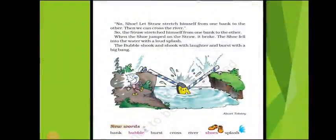Here we have some new words. Bank means the slope along which the river water runs. Bubble means a small round body of gas. Burst means to open suddenly. Cross means to pass over something. River means a natural body of water. Shoes — you know about those. And splash means the sound of a liquid being scattered in a random manner.